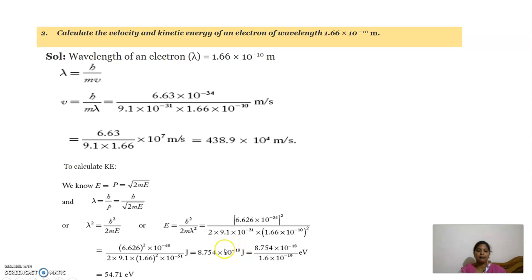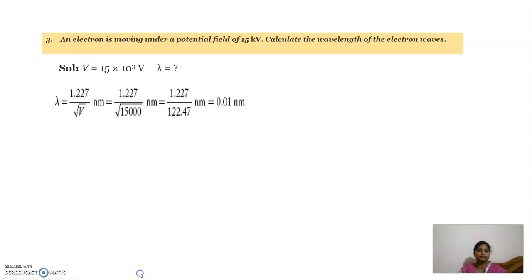If we want the same answer in terms of electron volts, divide by 1.6 into 10 power minus 19, and we get 54.71 electron volts.